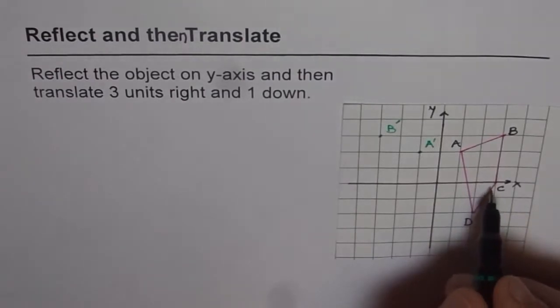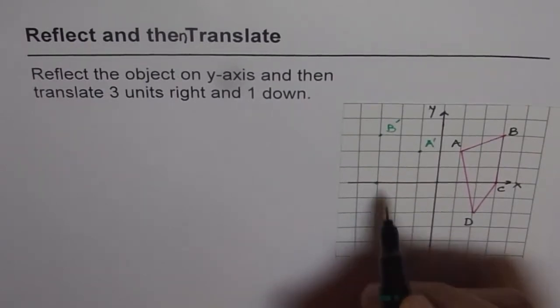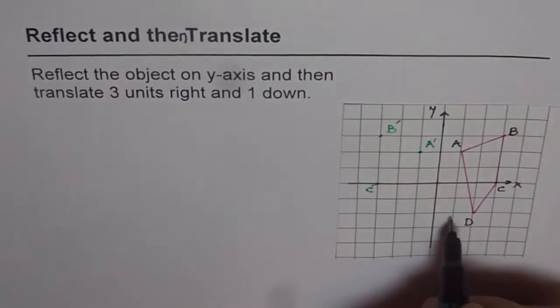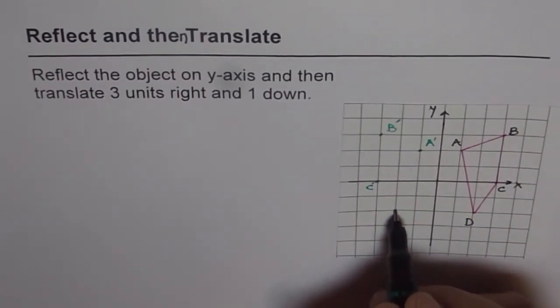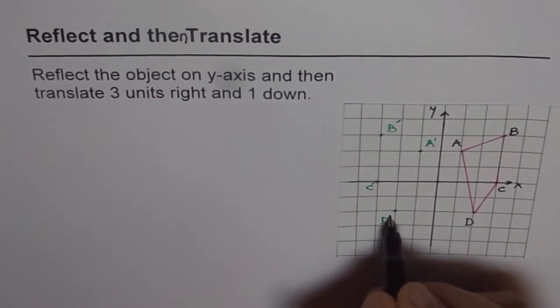C, which is on x-axis, three units on x-axis, plus 3, it will be at minus 3. That's C dash. Now D is two units on the right side of y-axis, it will be two units left of y-axis, so that will be D dash.